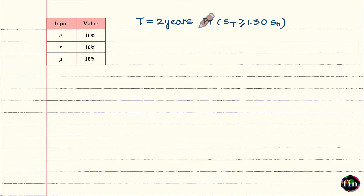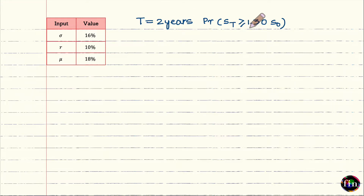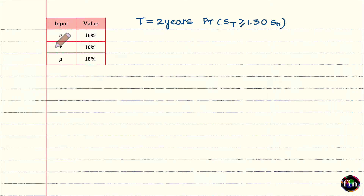Let us say I have a horizon of two years, denoted by capital T. I want to find the probability that my stock price at this future time point T is at least 30 percent higher compared to the stock price prevailing today, S0. We will find this probability in the risk-neutral world, so we will use the risk-free rate R, not the expected return mu.